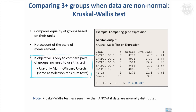Sometimes you might be justified in going straight to Mann-Whitney U tests when comparing just pairs of data to see if they're significantly different. If you get a significant Kruskal-Wallis result, you would then go on to do pairwise tests, which, because the data are non-parametric, would be Mann-Whitney U tests.